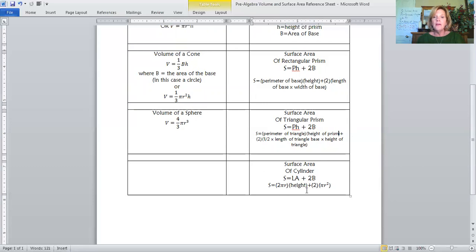Then surface area of a cylinder, this one is the tricky one, I think. Where it's the lateral area plus 2 times big B, where big B is still area of the base. So the lateral area is the circumference of the circular base. So 2 pi r, that's the circumference, times the height or length of the cylinder, height of the cylinder, plus 2 circles, area of the circle, pi r squared.